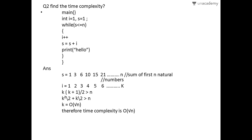This series keeps going, and we can conclude that the s series is the sum of the first k natural numbers. The loop stops when s is greater than n, i.e., k(k+1)/2 > n. Expanding this, k²/2 plus k/2 is greater than n. The dominant term is k², so we set k² equal to n, giving k equals root n. Therefore the time complexity is O(√n).